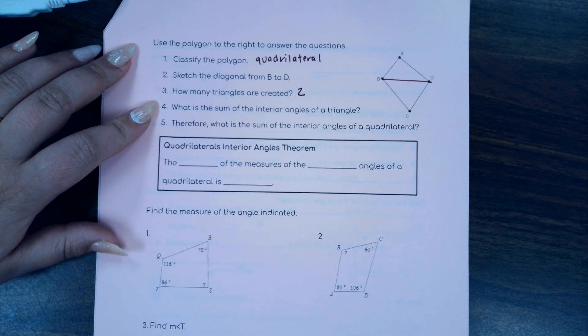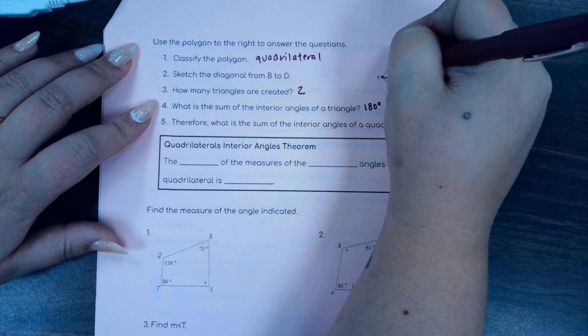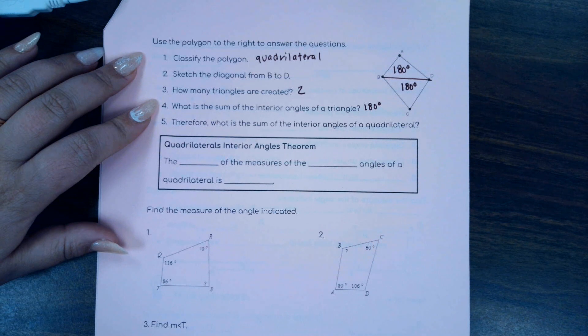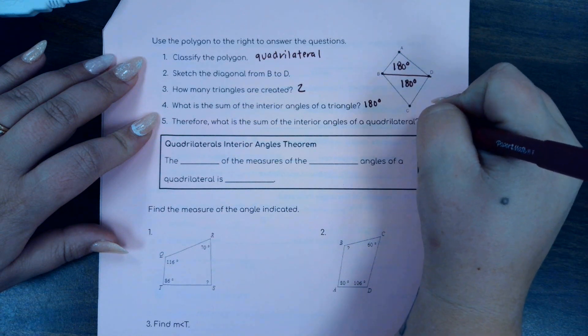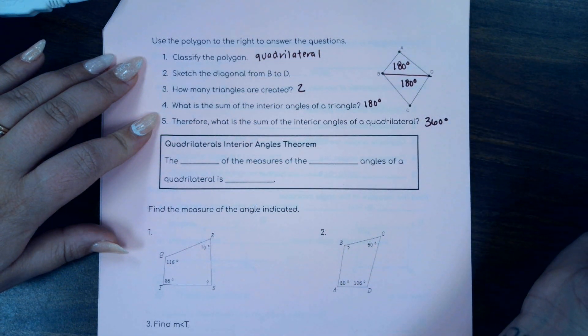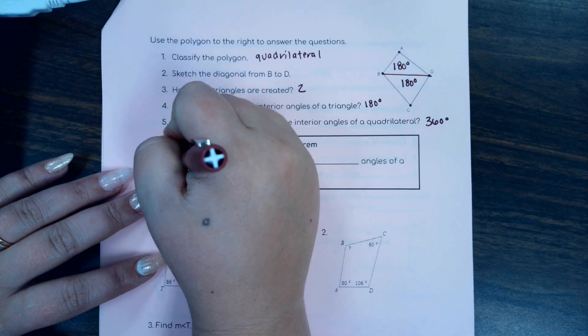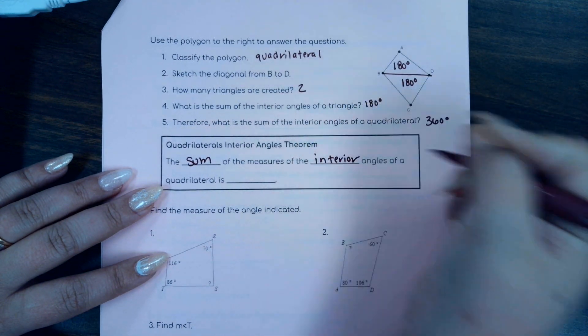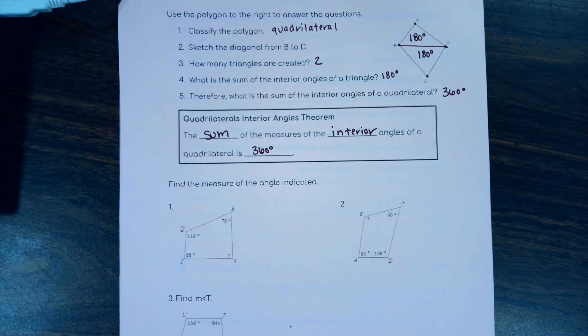Now remember from chapter four that the sum of the interior angles of a triangle is 180. So we have 180 degrees here and 180 degrees here. So we can conclude what is the sum of the interior angles of a quadrilateral? Well, just add those up. 360. So that is the quadrilateral's interior angle theorem. The sum of the measures of the interior angles of a quadrilateral is 360.